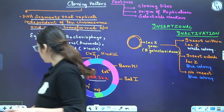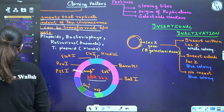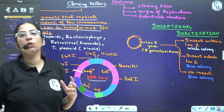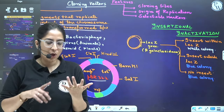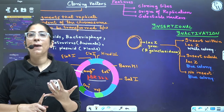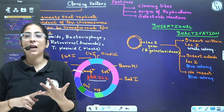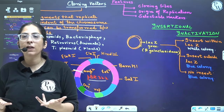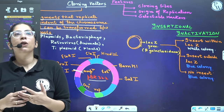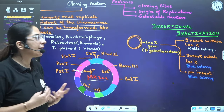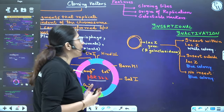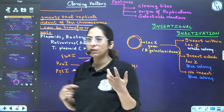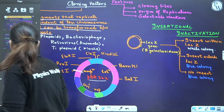These are the cloning vectors, but they are not the only ones. There are other cloning vectors also — for example, BAC (Bacterial Artificial Chromosome), YAC (Yeast Artificial Chromosome), retroviruses, and Ti plasmids. All these are your cloning vectors.